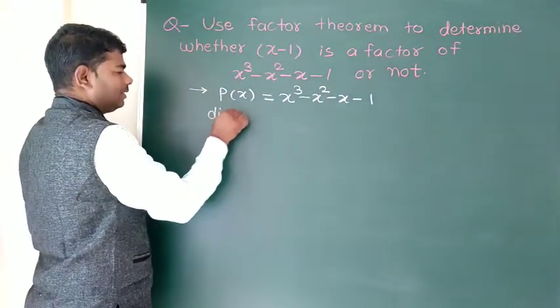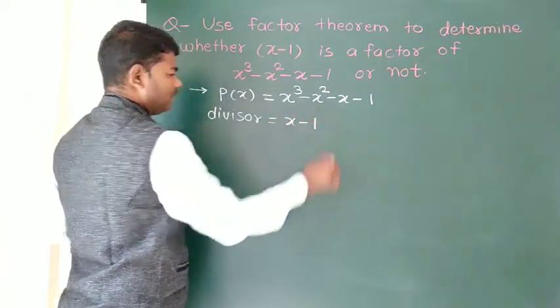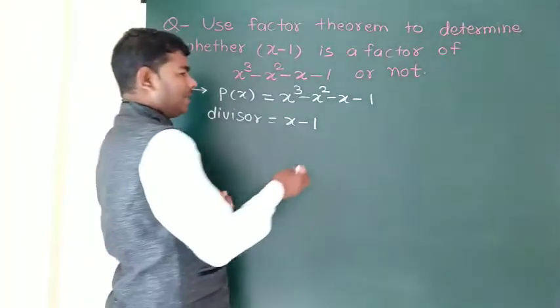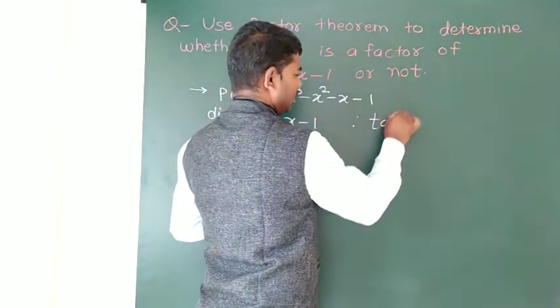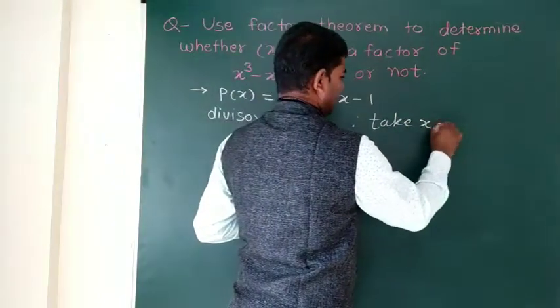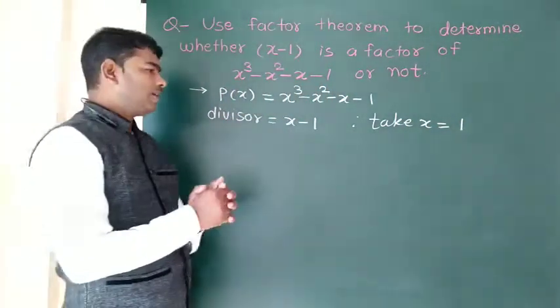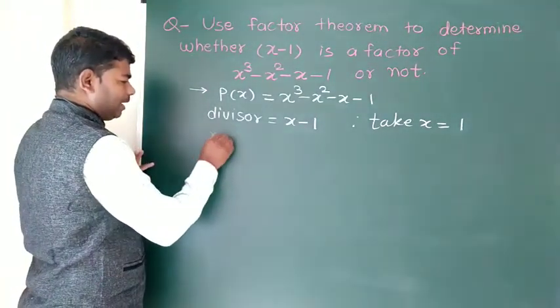To divide this polynomial by the divisor x minus 1, we need to find the remainder. If x minus 1 is the divisor, the remainder should be found by taking x equal to 1.